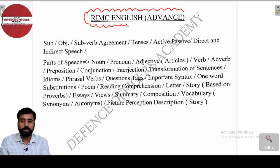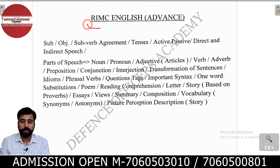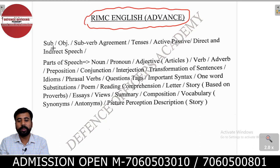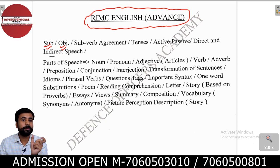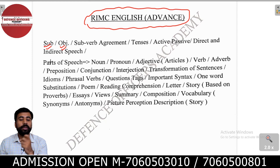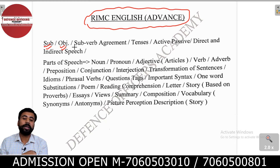First of all, let's talk about English. You need clarity in subject and object. For example, if I say that Dehradun is the capital of Uttarakhand, so Dehradun is the subject. If I say that I play badminton, then badminton is an object. Clarity is very important between subject and object. According to that, you will learn subject-verb agreement.